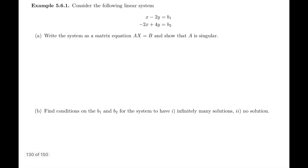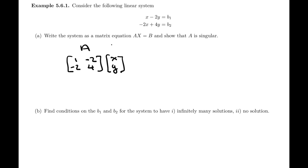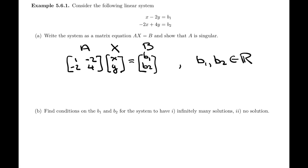This is example 5.6.1. Consider the following linear system. First, write the system as a matrix equation Ax equals b. We have the matrix of coefficients, the matrix of variables x and y, and the matrix of constants b1 and b2, where b1 and b2 are real numbers — scalars — so we're allowing them to be any real numbers.